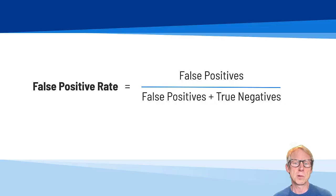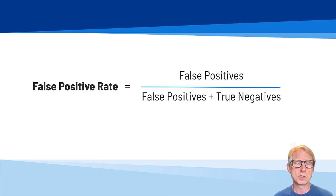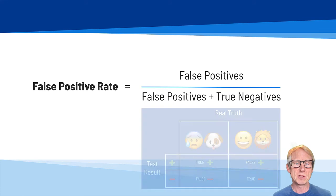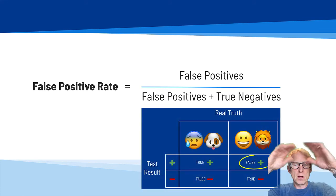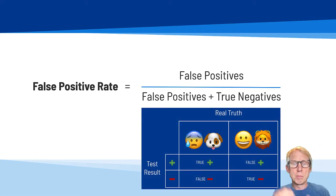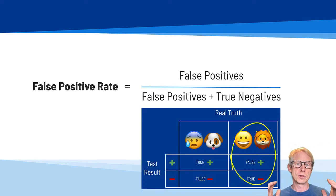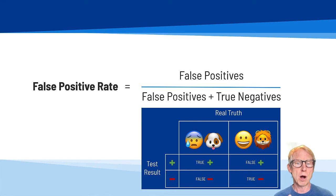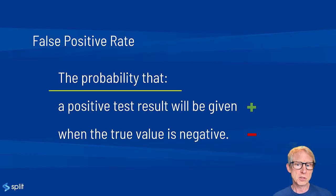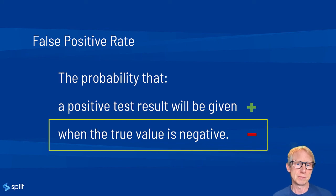Calculating the false positive rate is relatively simple. It's the ratio of false positives over the sum of false positives and true negatives. We're basically dividing the number of false positives by the total number of negative results. What you end up with is the probability that a false alarm will be raised — that a positive result will be given when the true value is negative.